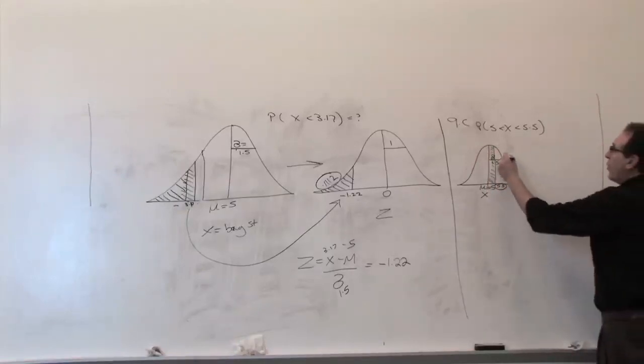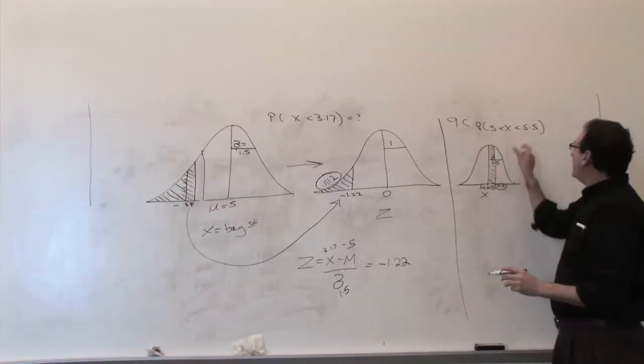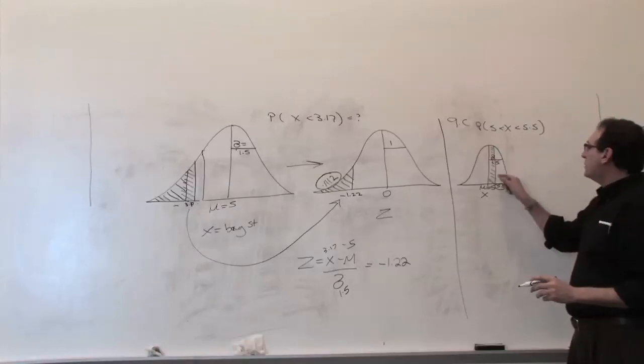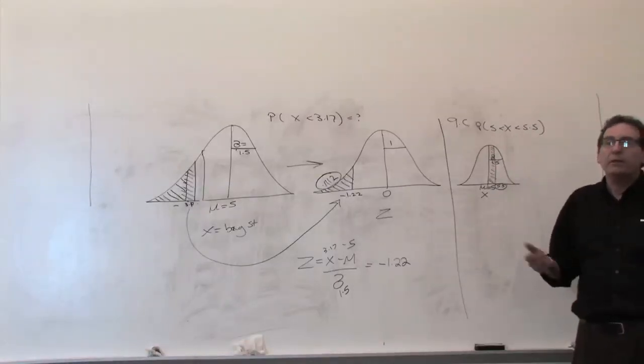Now, if I took the whole from 5 to 6.5, namely a full standard deviation, that would be 34%. So this piece here, it's got to be less than 34%. The question is, how much lower? Anybody want to take a guess? What would be an educated guess?